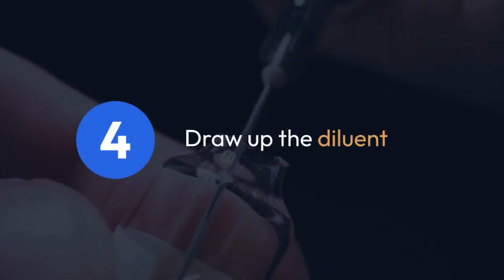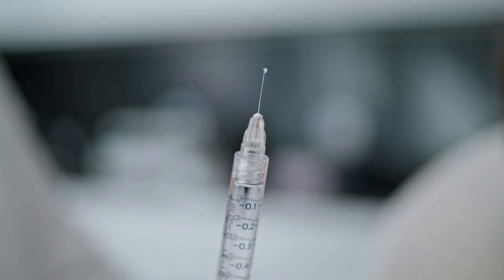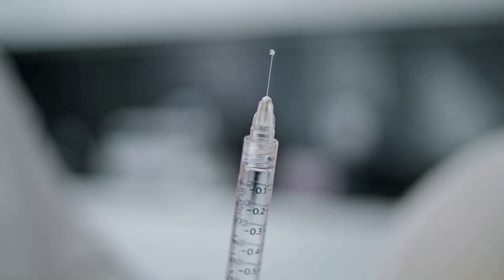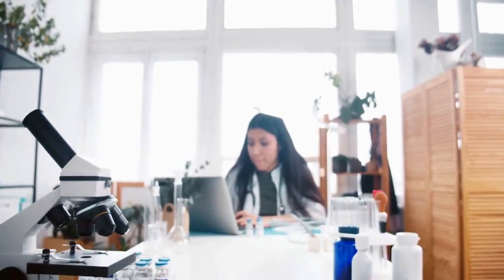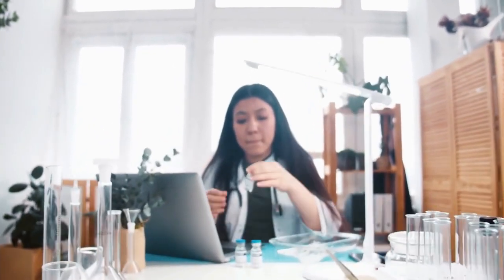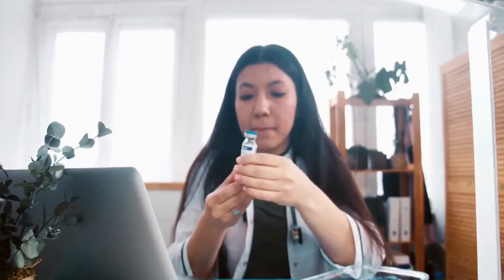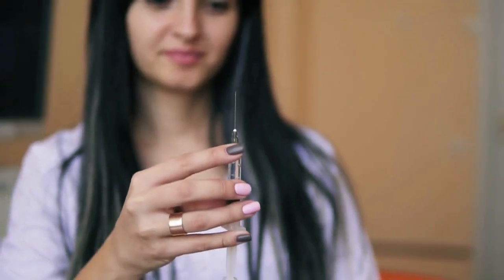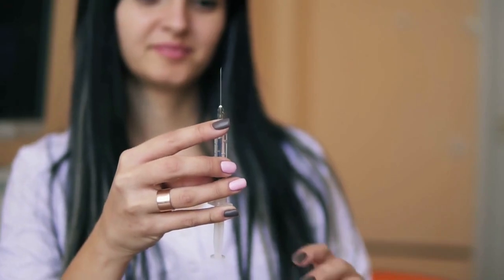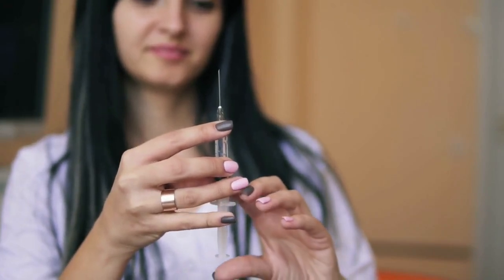Step 4: Draw up the diluent. Using a sterile syringe, draw up the required amount of diluent as specified on the artesanate vial label. This amount will vary depending on the concentration of the artesanate. Double-check the volume to ensure accuracy. Step 5: Add the diluent to the artesanate vial. Insert the needle into the rubber stopper of the artesanate vial and slowly inject the diluent into the vial.